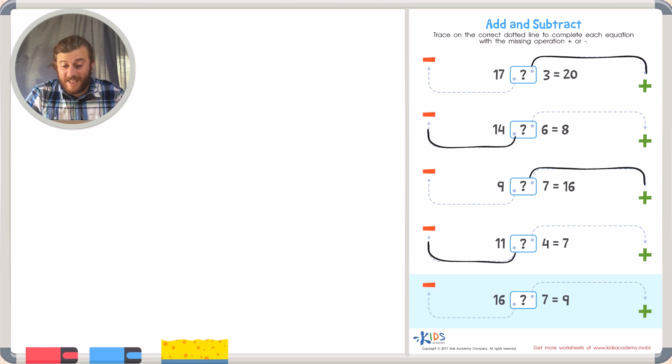And in our final example, we have 16 plus or minus 7 equals 9. So this one we can do in our heads. 16 is bigger than 9. So to turn 16 into 9, do we add or do we take away? You're right. We have to take away to turn a bigger number into a smaller number. So 16 minus 7 equals 9.